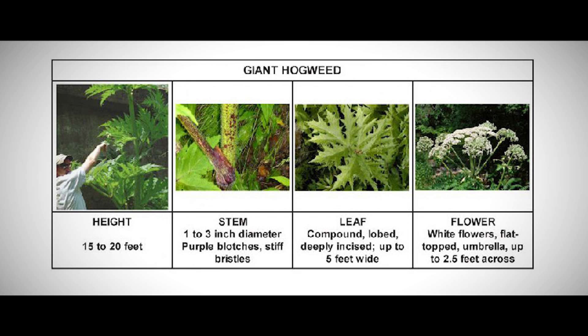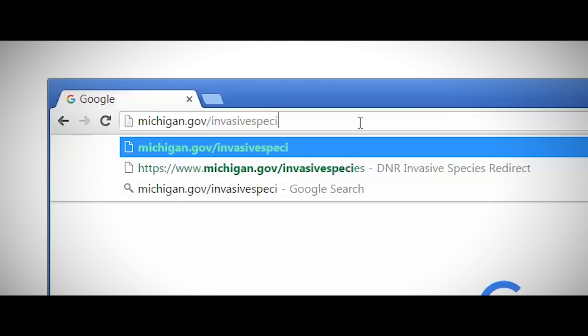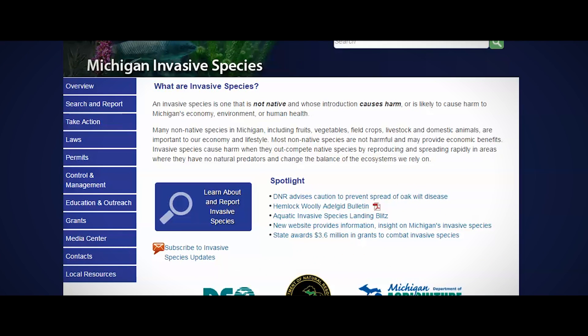There are several native plant species that can be misidentified as giant hogweed. If you think you've found giant hogweed, avoid touching it. If you want to learn more, a great place to start is michigan.gov/invasivespecies. The site provides information on invasive species specific to Michigan, and you can also find out about laws, permitting, grants, volunteer opportunities, and more. Remember, even if an invasive species is widespread, it doesn't mean it's everywhere. Stay tuned for more videos on invasive species and how you can stop them from spreading. Thanks for watching!